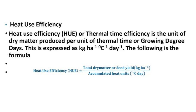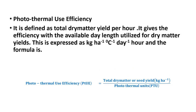Heat use efficiency (HUE), also called thermal time efficiency, is defined as the amount of dry matter produced per unit of thermal time. It is expressed as kg per hectare per degree centigrade per day. The equation is: HUE = total dry matter (kg/ha) divided by accumulated heat units. For example, to produce 2000 kg/ha of seed yield requiring 3000 accumulated heat units, HUE = 2000 ÷ 3000 kg per hectare per degree per day.